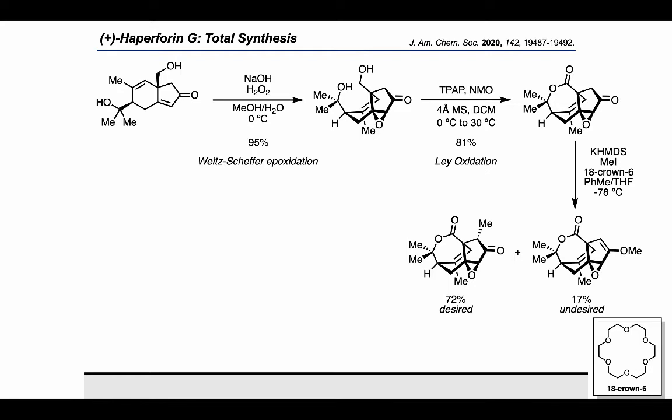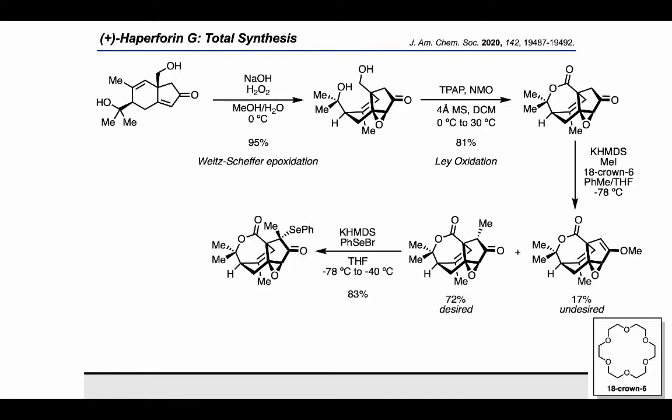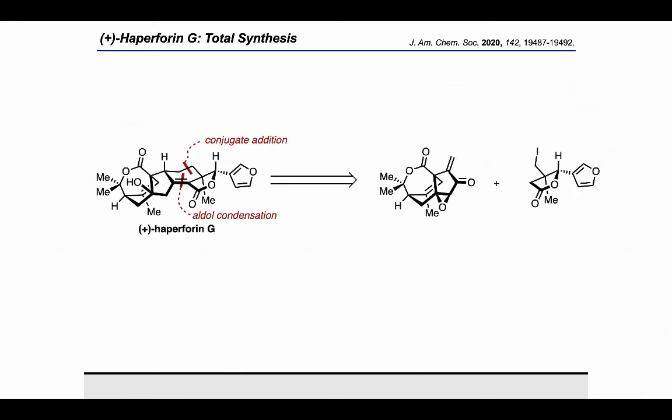However, as the objective was ultimately not to install a methyl group, but rather to set up an alpha-beta-unsaturated ketone for conjugate addition chemistry, they proceeded by installing a phenylselenide motif, and subsequently used hydrogen peroxide to carry out a selenoxide elimination. Reflecting on the authors' retrosynthetic plan once more, we can see how they had successfully made the coupling partner on the left, but the furanyl lactone on the right still needed to be made in order to complete the synthesis.